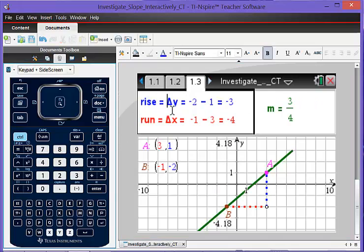Notice that this shows the rise or the change in Y in blue. The run or change in X in red. Coordinates of the points are listed here. The X coordinates in red, the Y coordinates in blue.